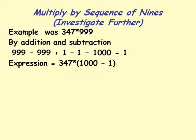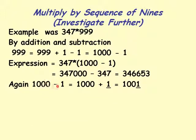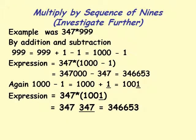That is 347,000 minus 347. Using 'all from 9 and last from 10' of 347 gives 653, and one less than 347 is 346, so the result is 346,653 — confirming our answer by both the Sutra method and by direct arithmetic.